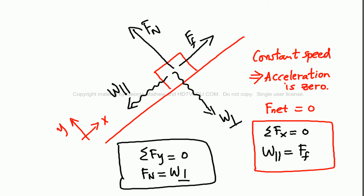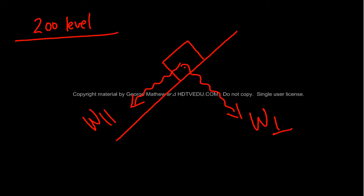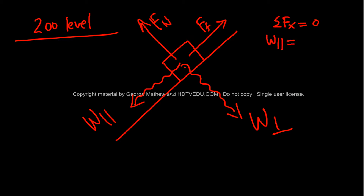At the 200 level, we draw the mass with the same components: w parallel, w perpendicular, the normal force, and the force of friction. Net force along the horizontal is equal to zero — it is coming down at constant speed, so acceleration is zero — meaning w parallel equals the force of friction.